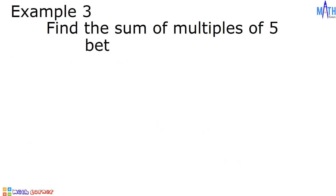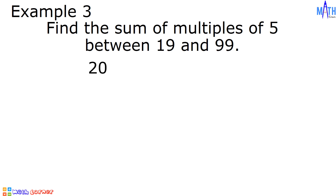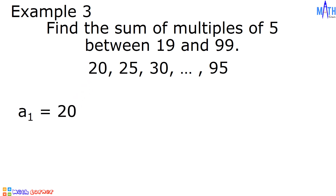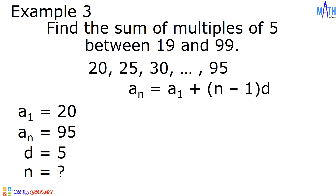Example number 3. Let us find the sum of multiples of 5 between 19 and 99. The first term is the first multiple of 5 between 19 and 99, which is 20. The second term is 25, and the third term is 30. The highest multiple of 5 between 19 and 99 is 95. So we have the arithmetic sequence 20, 25, 30, up to 95. A sub 1 equals 20, A sub n equals 95, common difference equals 5, and n is unknown. Since we need the value of n, let us solve for n.